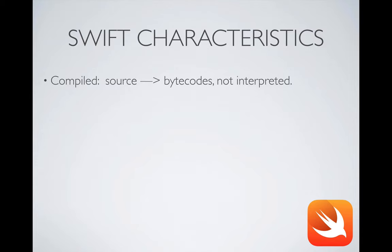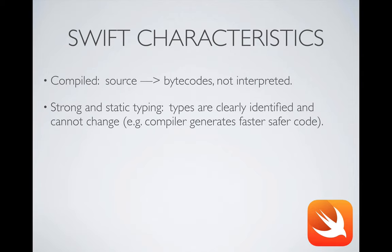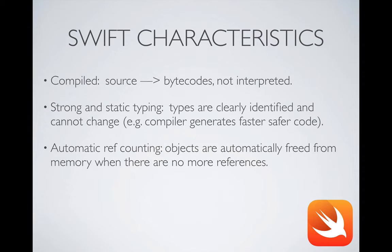Some of the characteristics of the Swift programming language are that it's compiled — the source code gets compiled down into binary code, it is not interpreted like many modern languages. It supports strong and static typing, meaning the types are very clearly identified in the code and cannot change over the course of the program. Strong and static typing basically translates into an opportunity for the compiler to generate faster and safer code. Swift also supports automatic reference counting, meaning objects are automatically freed from memory when there are no more references to them.